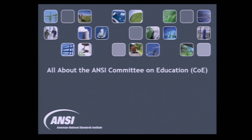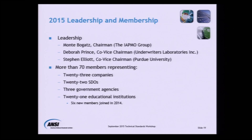Why does ANSI have a Committee on Education? It all stems from ANSI's belief that technical standards are key to national economy and global commerce. The Committee looks for opportunities to attract and educate the upcoming generation of U.S. standards professionals — it's about outreach and building the U.S. standardization system from the ground up. Leadership includes myself serving as Chairman in 2015, Co-Chairman Deb Prince from UL, and Co-Chairman Dr. Steve Elliott from Purdue University. The Committee has more than 70 members representing 23 companies, 22 standards development organizations, 3 government agencies, and 21 educational institutions.